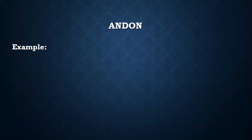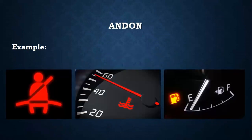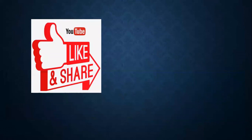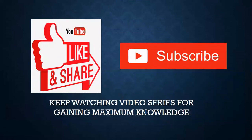At the end, I want to share an example of day-to-day life Andon: they can be seen in your motor vehicle — different signs or alarms for different situations or abnormalities. Hope you got the concept well. Kindly share your feedback in the comment section, like the video, and share with your friends. Subscribe to the channel for continuous updates. The next tool will be OEE, that is Overall Equipment Effectiveness. Till then, keep learning, keep growing.